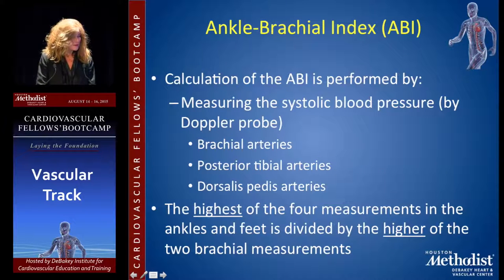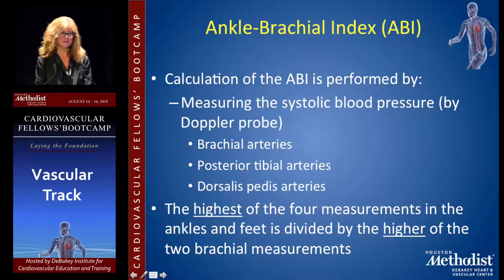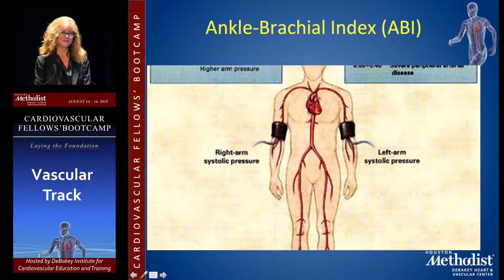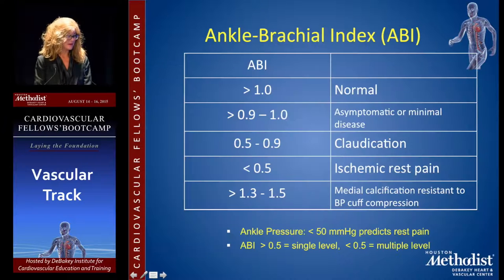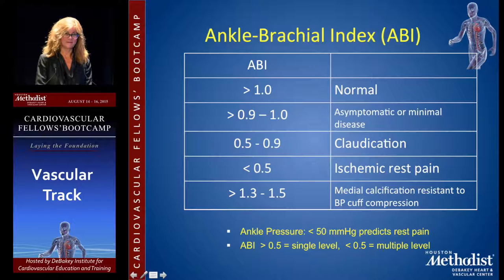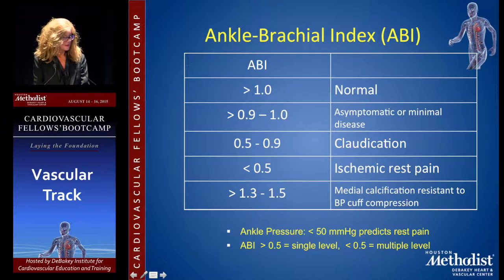You should perform an ABI in anyone without pulses, anyone with non-healing wounds, exertional leg symptoms, older patients, or patients with diabetes. An ABI is obtained by measuring blood pressure in both arms and using the highest value — patients with significant peripheral arterial disease may have subclavian artery disease on the left, making that pressure falsely low. You then measure pressure at the posterior tibial and dorsalis pedis artery with the Doppler probe and use the highest value at the ankle level.